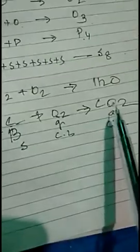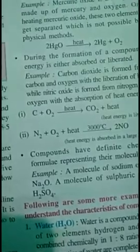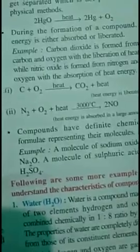During the formation of a compound, heat is either absorbed or liberated. For example, when carbon burns in the presence of oxygen, it produces carbon dioxide plus a large amount of energy in the form of heat and light. So during the formation of a compound, energy can be either absorbed or produced.